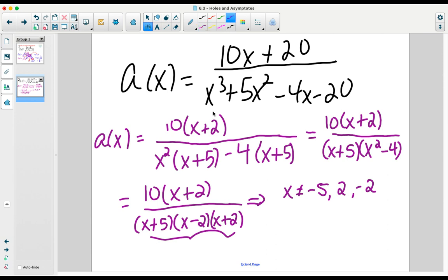We see the common factor of x plus 2 from the numerator and the denominator. Nothing else in common to simplify, meaning our final simplified form of A of x is 10 over x plus 5, x minus 2.